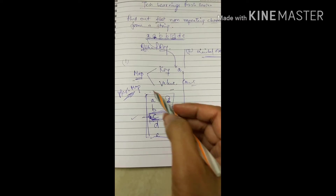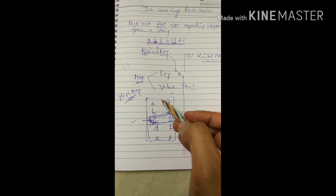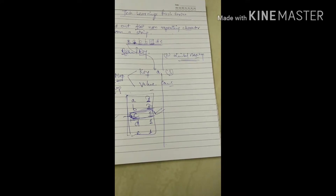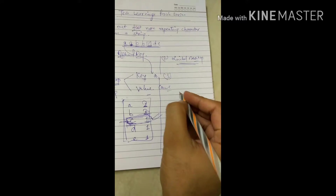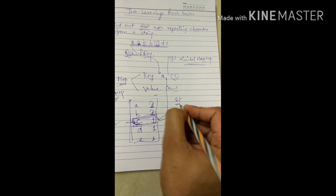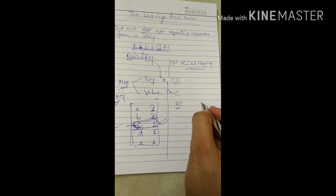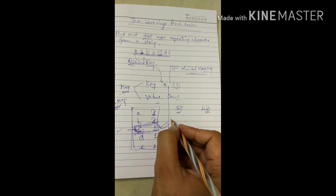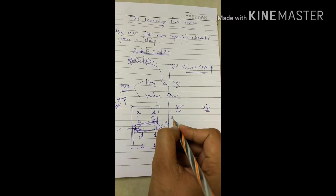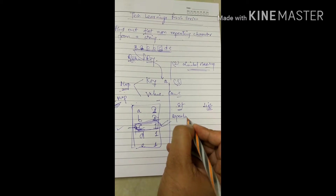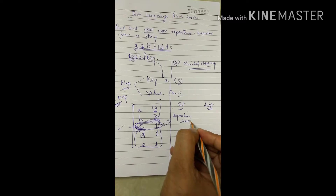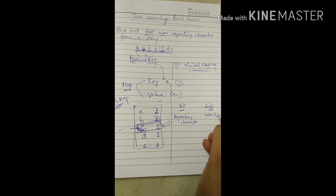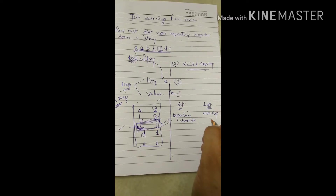There is one more way to solve this using two additional data structures: a set and a list. The set is going to contain your repeating characters, and the list is going to contain your non-repeating characters.